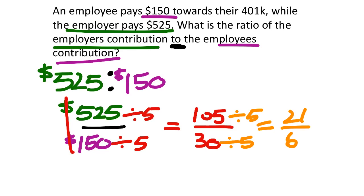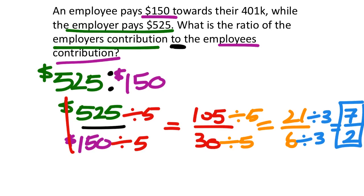Now 21 and 6 are both divisible by 3. So 21 divided by 3 is 7 and 6 divided by 3 is 2. The final simplified answer is 7 over 2. We can verify on the calculator: 525 over 150, press Enter, and it simplifies to 7 over 2.